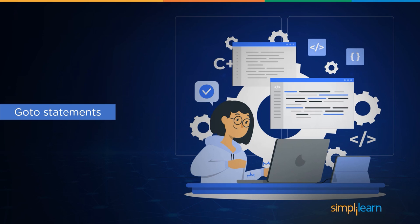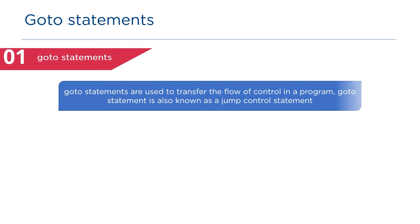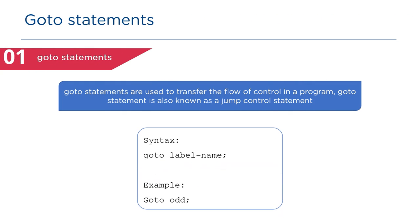Now let's have a look at goto statements. Goto statements are used to transfer the flow of control in a program. The goto statement is also known as a jump control statement because it is used to jump to a specified part of the program. The syntax is: goto label_name; — a label in a goto statement is a name used to direct the branch to a specified point in the program. In the example, the label name is 'odd'.